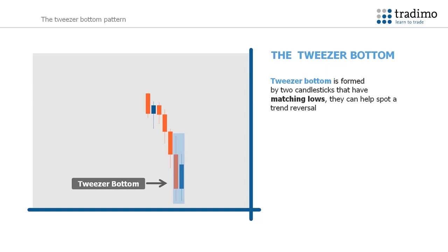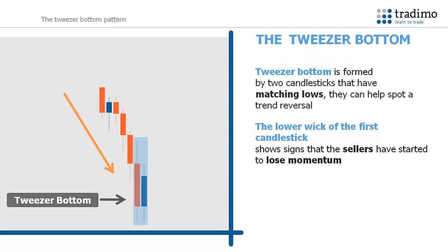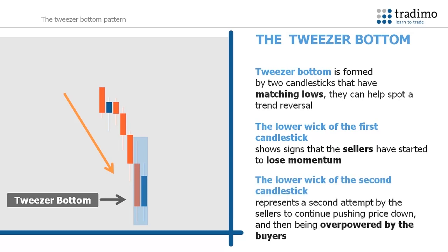Tweezer bottoms are formed by two candlesticks that have matching lows and can help spot a trend reversal. You can see in this example that the market is in a downtrend. The lower wick of the first candle shows signs of the sellers losing momentum. The lower wick of the second candlestick represents a second attempt by the sellers to continue pushing price down and then being overcome by the buyers. The wicks are of equal length and the lows are at the same level. These characteristics can signal the reversal of the downtrend to the upside and demonstrate how the bears were overpowered by the bulls.